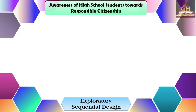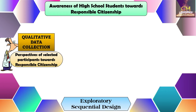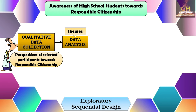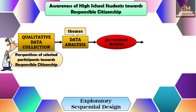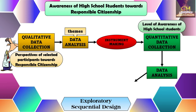Consider this example: determining the awareness of high school students towards responsible citizenship. Since this is an exploratory sequential design, the researcher would conduct qualitative data collection first. The qualitative data would be the perspectives of selected participants towards responsible citizenship. After which, data analysis is conducted to come up with possible themes or variables, which will then be used as a basis for designing a research instrument for gathering quantitative data. The quantitative data would be the level of awareness of high school students towards responsible citizenship. After quantitative data is collected, the researcher conducts data analysis, leading to an interpretation of the results of both datasets.